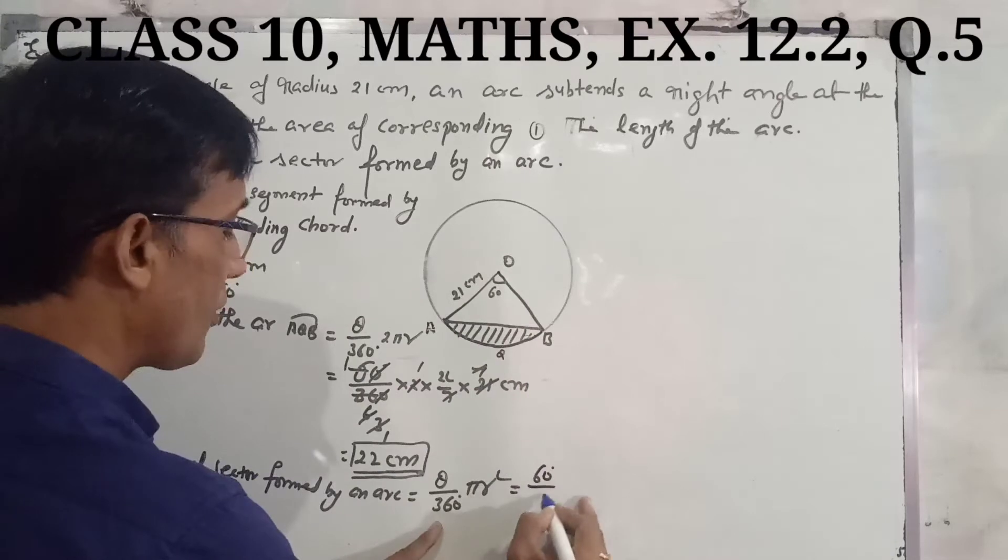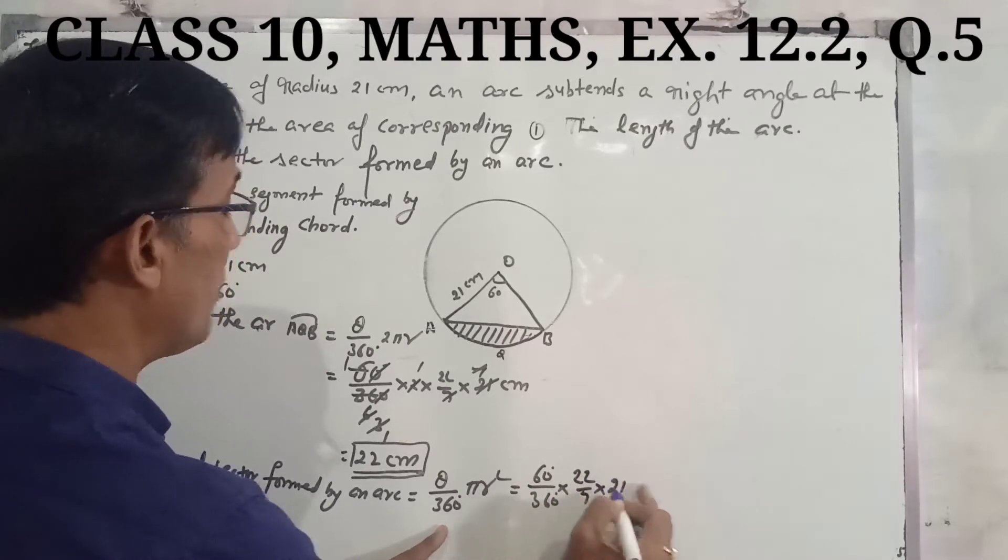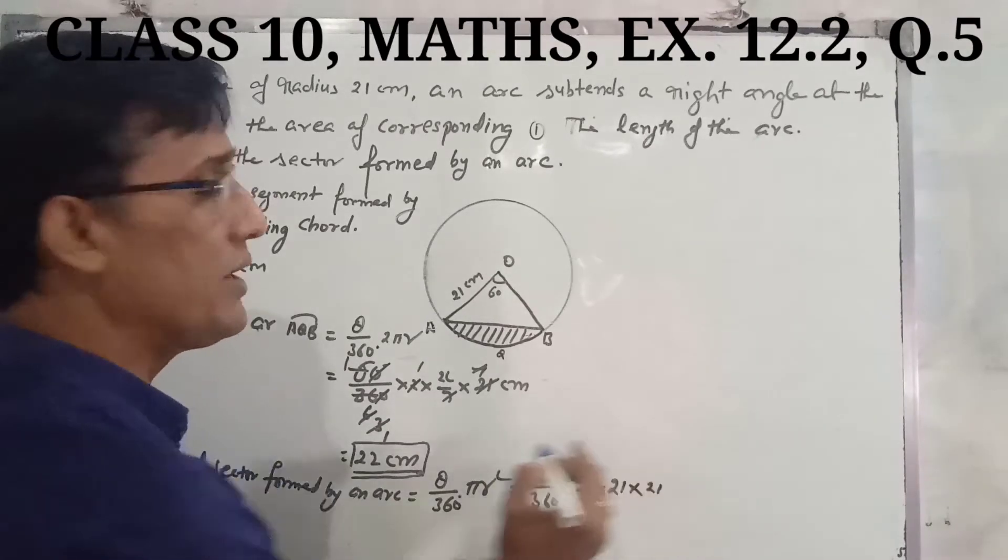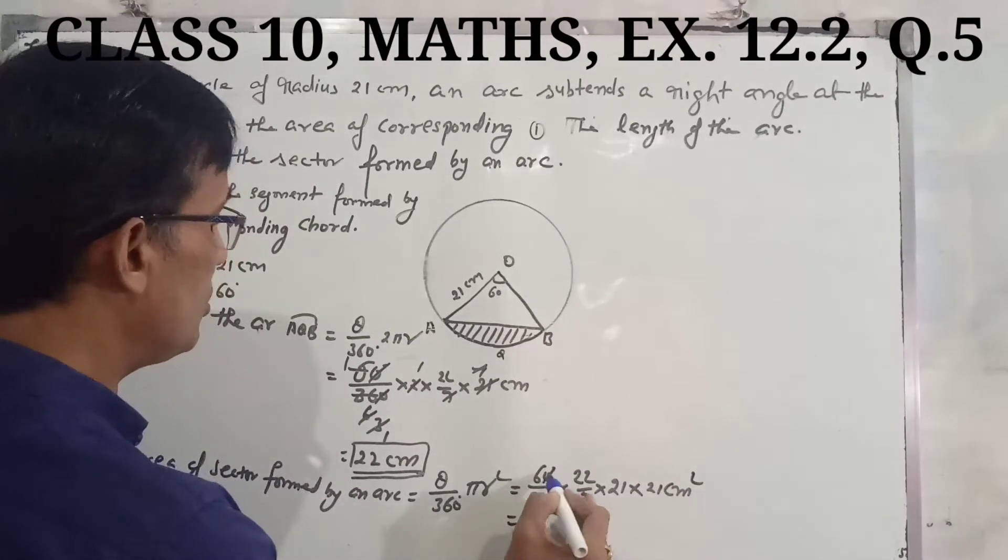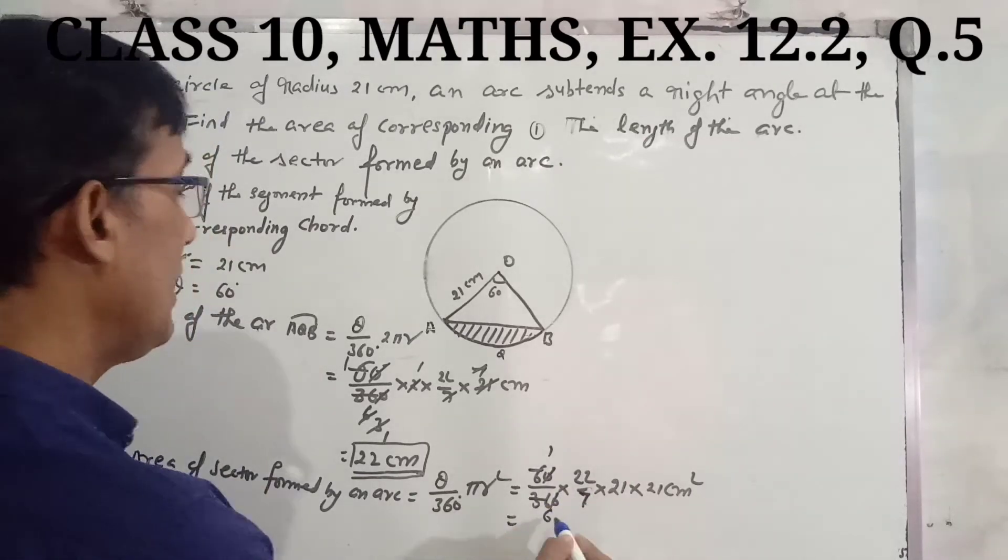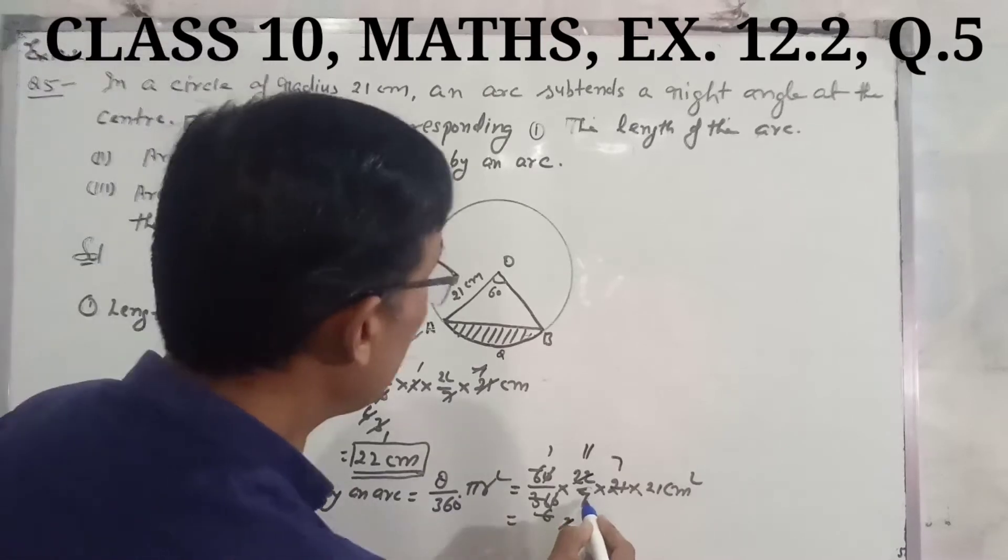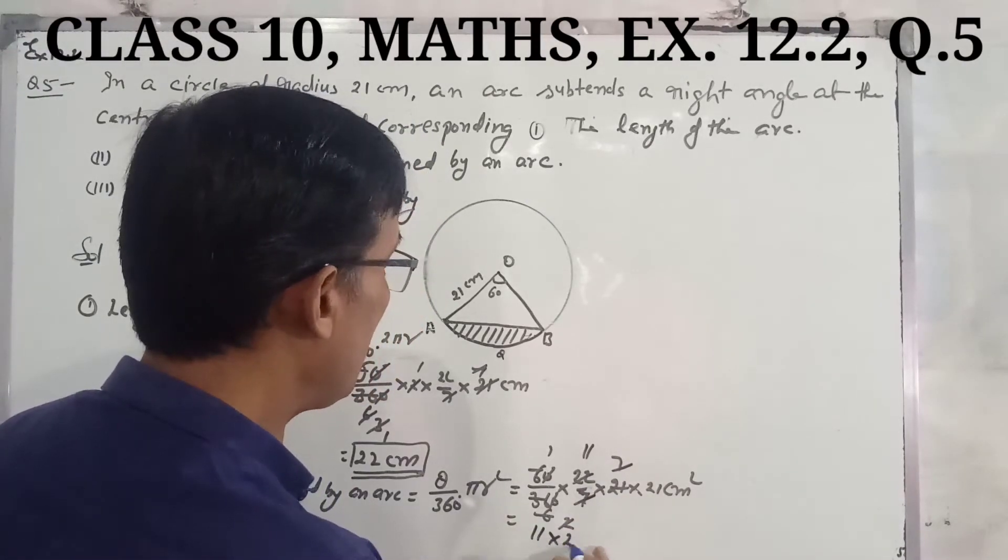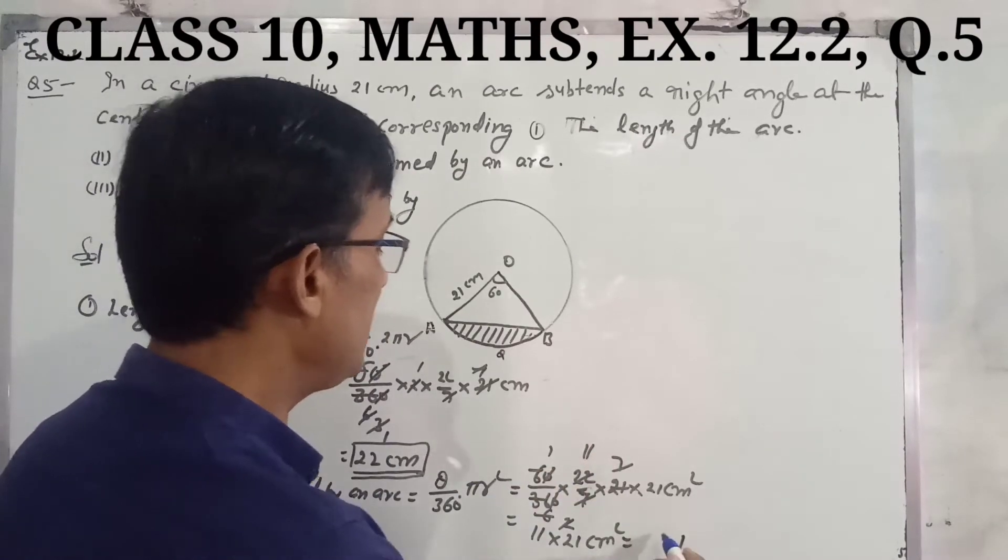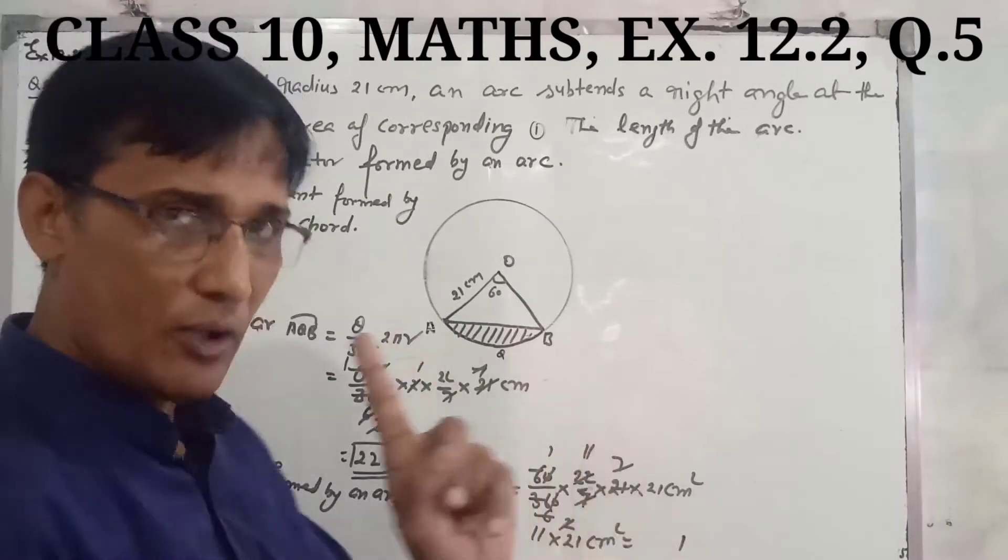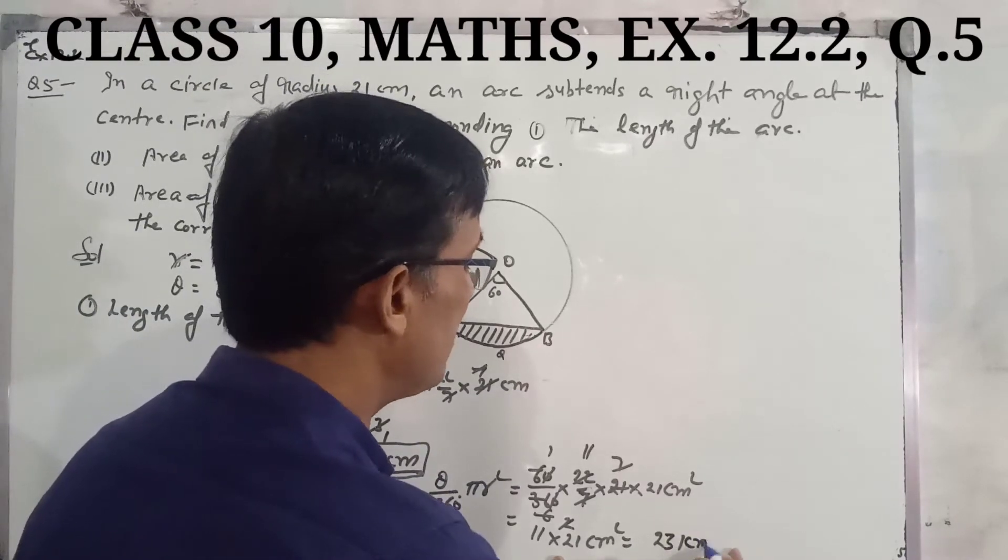Theta's value is 60 degrees, so 60 upon 360 multiplied by pi, which is 22 upon 7, and r square is 21 squared. 21 by 21 and the area is in square centimeters. After cancellation, 60 with 360 gives 1/6, then simplifying we get 11 multiplied by 21, which equals 231 cm square.